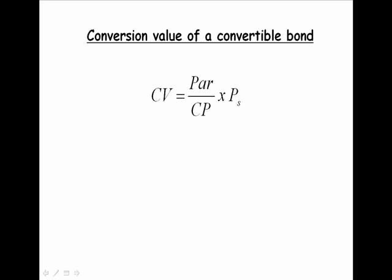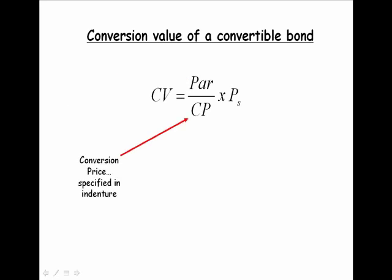This formula helps us determine the conversion value of a convertible bond. In the numerator we have the par value — the par value is probably $1,000. In the denominator we have the conversion price, which is a price that will be specified in the indenture.